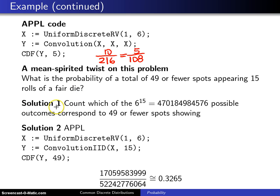So solution one is to do what we did on the previous slide, and that says of the 6 to the 15th power different possible outcomes, count the number that are corresponding to 49 or fewer spots showing. That's not something that you want to do by hand, but APPL is particularly adept at this type of thing.